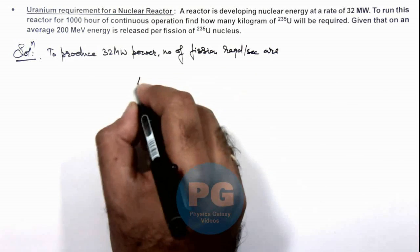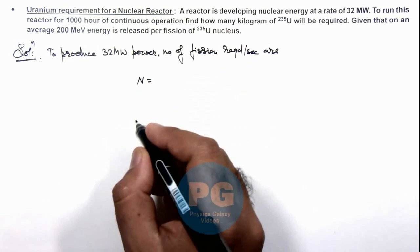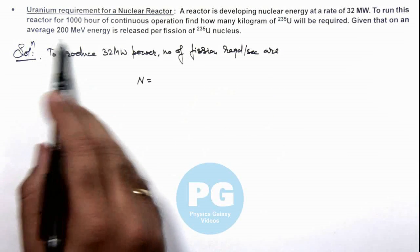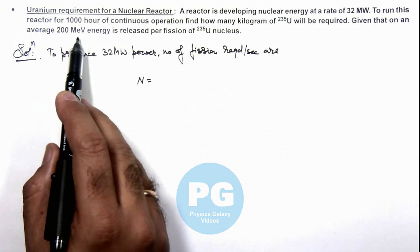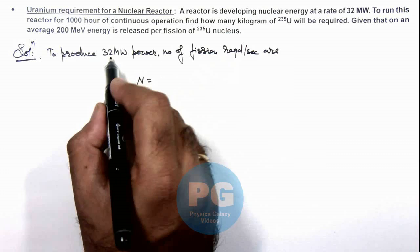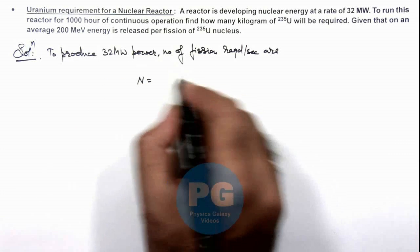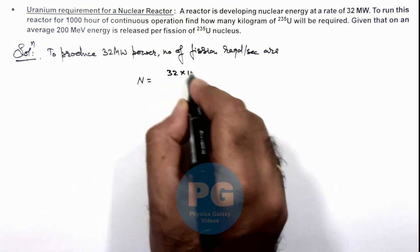If we calculate the number of fission events per second, we are given that 1 fission releases 200 MeV. So per second it is releasing 32 megawatts, this is 32 × 10^6.